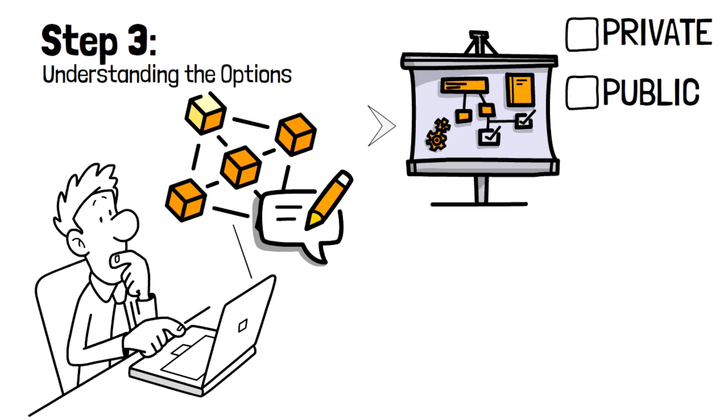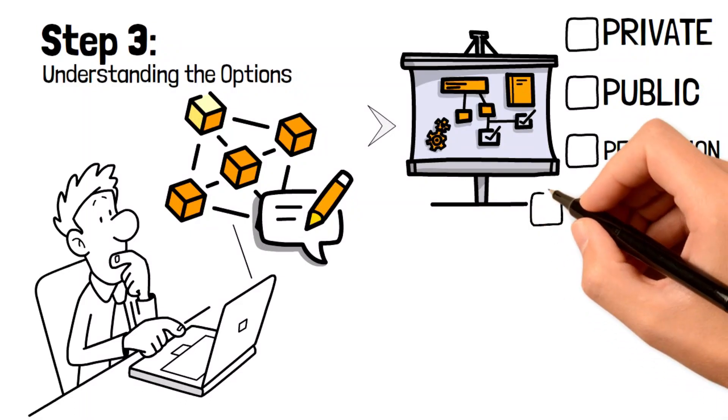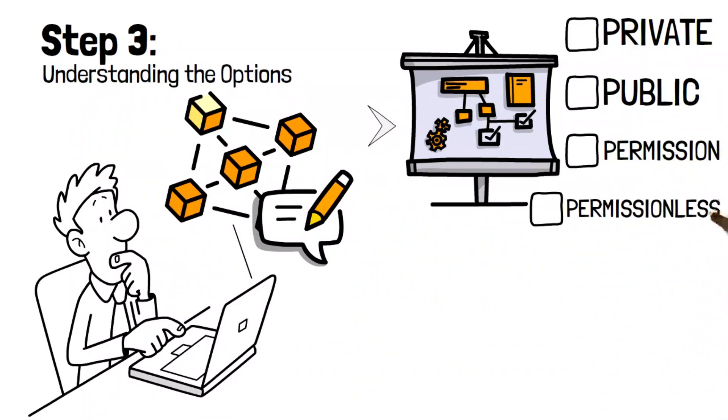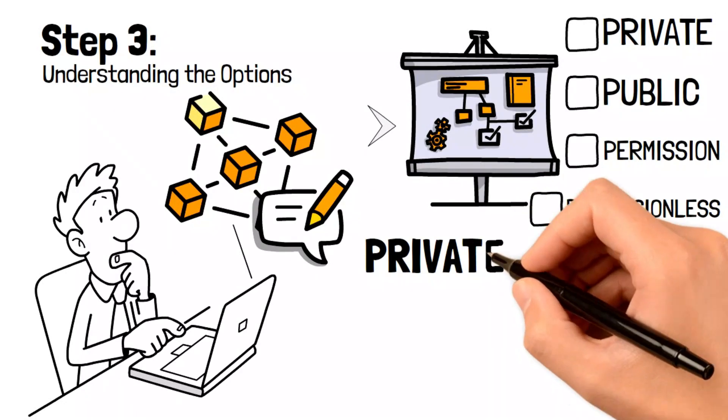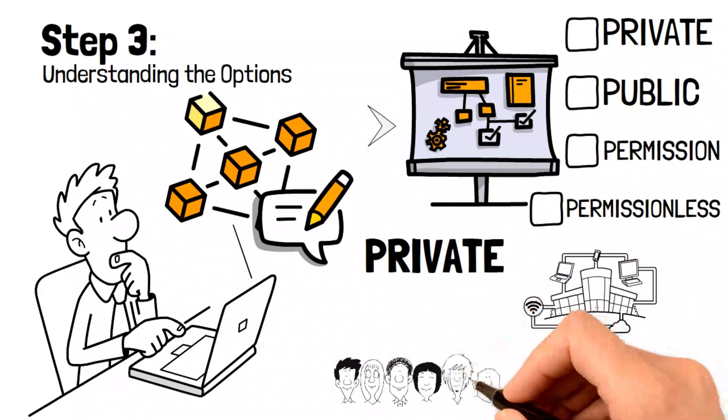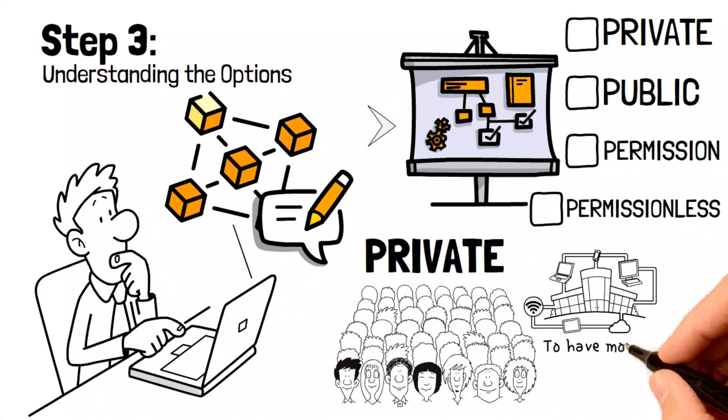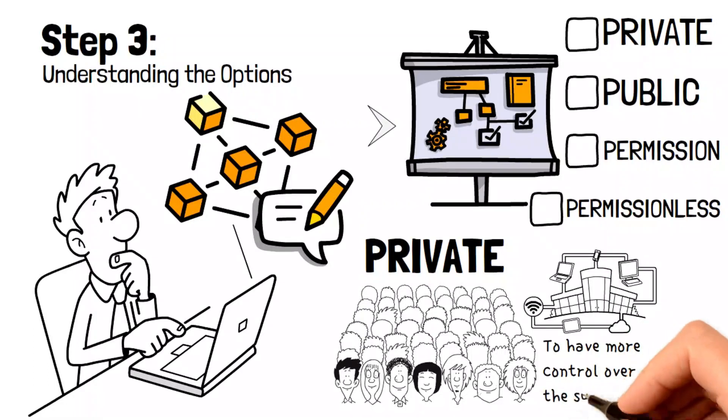You must choose between a private, public, permission, or permissionless blockchain based on your coin's objectives and project goals. For instance, if a company or country is creating a coin, it might opt for a private blockchain to have more control over the system.